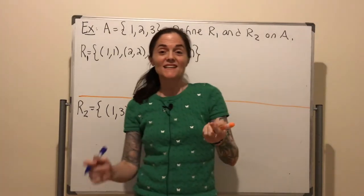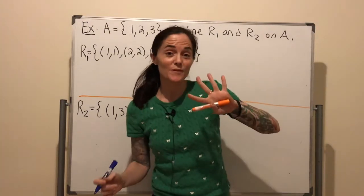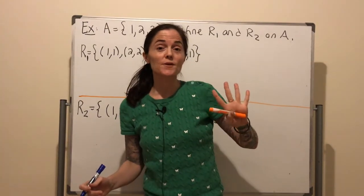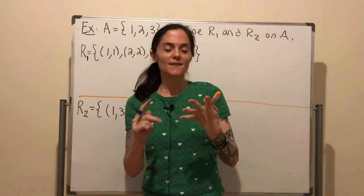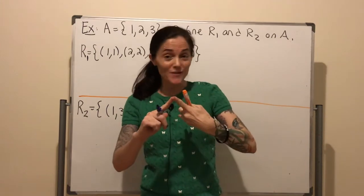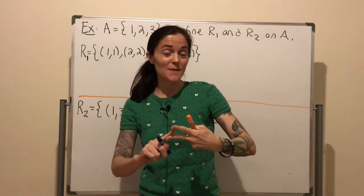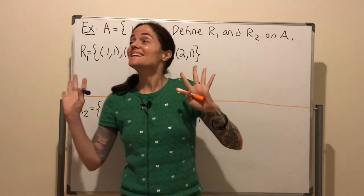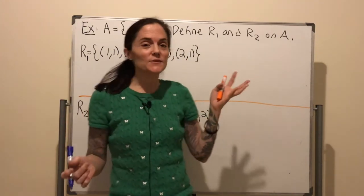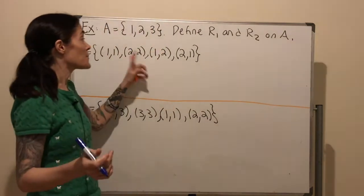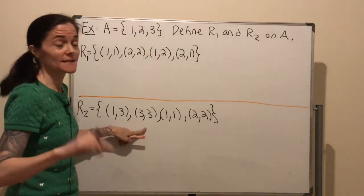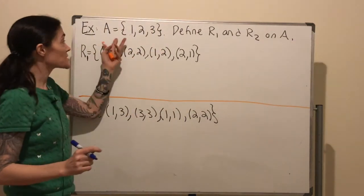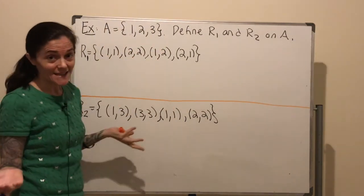We just looked at four relations on the natural numbers and decided which ones were reflexive, symmetric, and transitive. Now I want to think about these two relations, R1 and R2, which are on this finite set A.